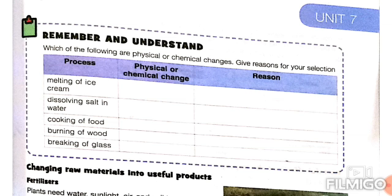This is a table. You can see: melting of ice cream, dissolving salt in water, cooking of food, burning of wood, and breaking of glass. Fill in the table with the type of change and your reason, then send it to the helpline.